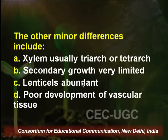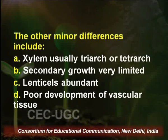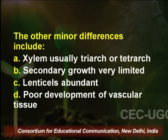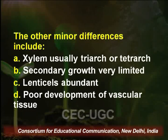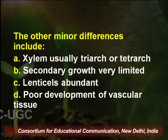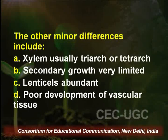The other minor differences between the normal root and the coralloid root are: the xylem is usually triarch or tetrarch in case of the coralloid root; secondary growth is very limited; lenticels are very much profound and abundant in coralloid roots; and the vascular tissues are poorly developed as compared to those of normal roots.